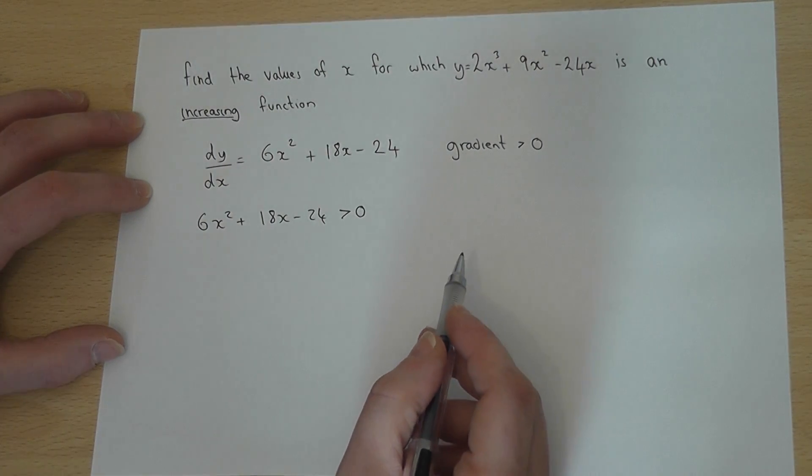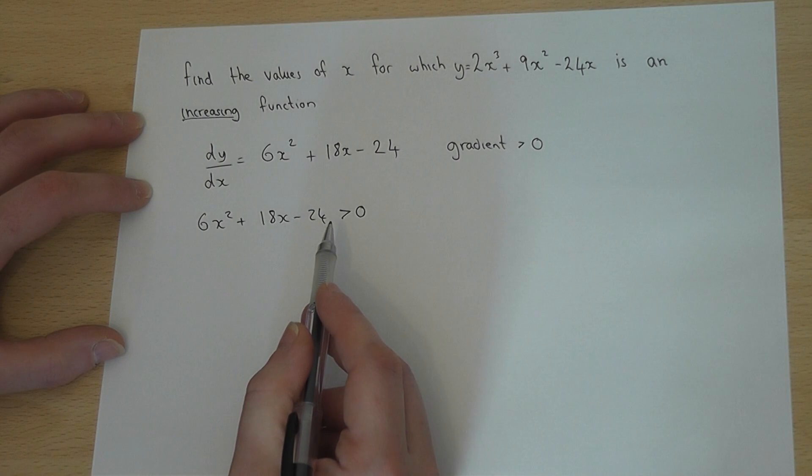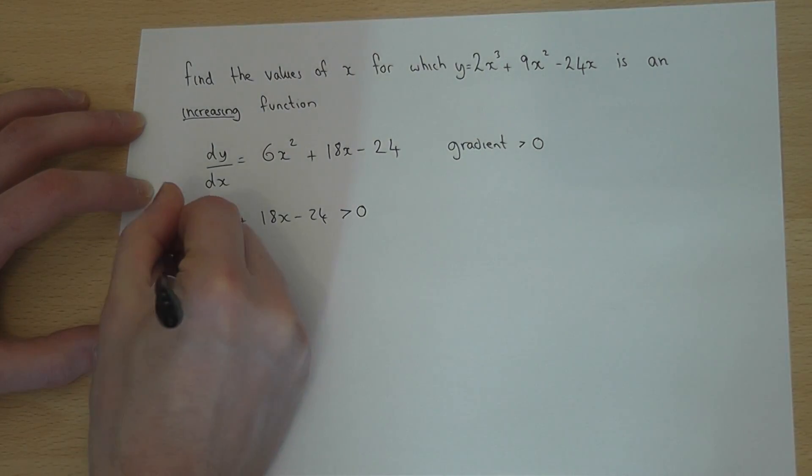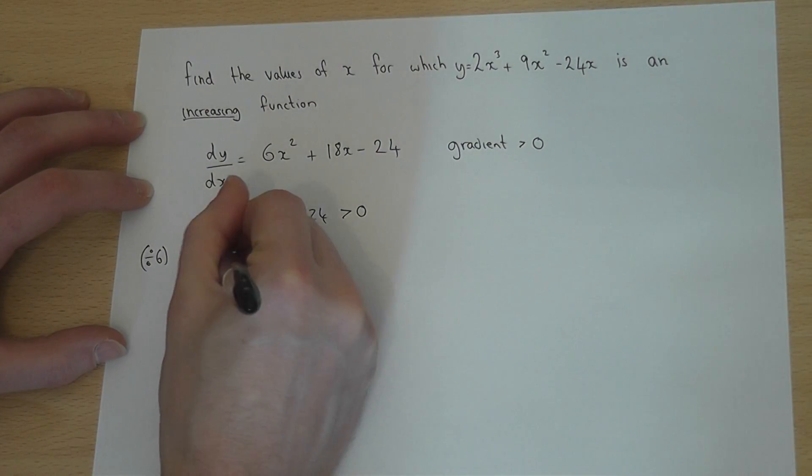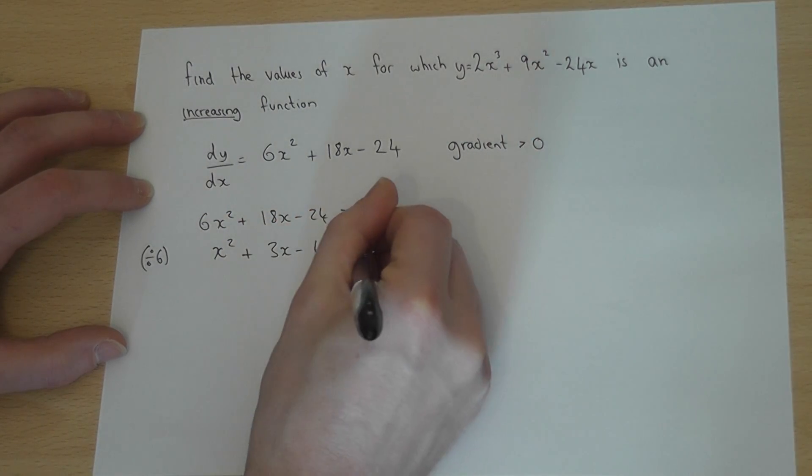What I observe is that all these numbers here have a factor of 6, so if I divide by 6 I get x squared plus 3x minus 4 is bigger than zero.